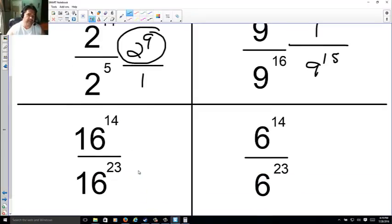Here, bottom wins by 9. So, I have 16 to the 9th. But, since it's on the bottom, you put 1 over 16 to the 9th. And here, bottom wins by, well, 9. So, 1 over 6 to the 9th. I guess I don't get no points for originality.